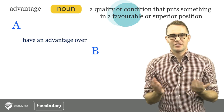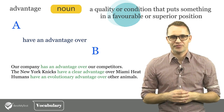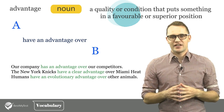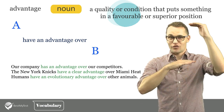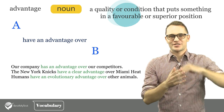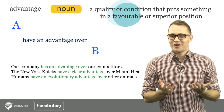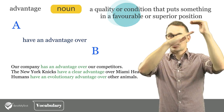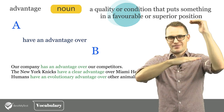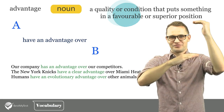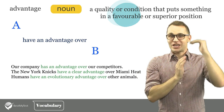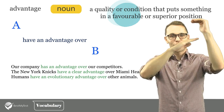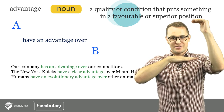Let me give you some examples. Our company has an advantage over our competitors. The New York Knicks have a clear advantage over Miami Heat. Or: Humans have an evolutionary advantage over other animals.